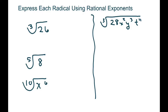Hi everyone, we're going to express each radical using rational exponents. I have four problems here. Basically what you're doing is writing your base — here, 26 — your power is to the first power, and you put your root in the denominator. That's how you use rational exponents.